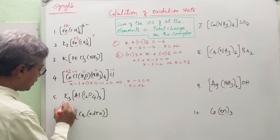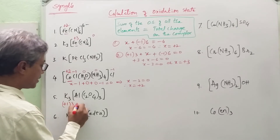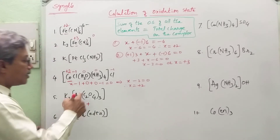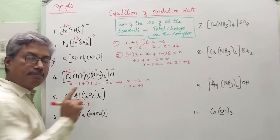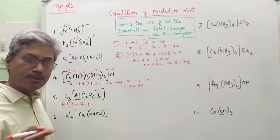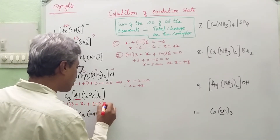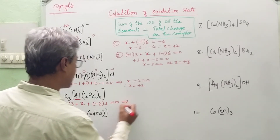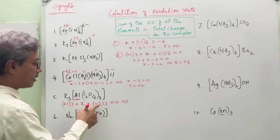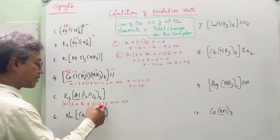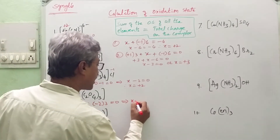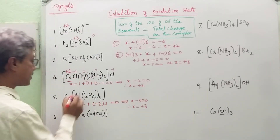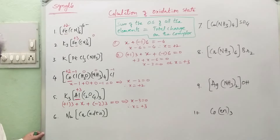Similarly, there is an alkali metal with charge +1 appearing 3 times, giving +3. Plus the central metal x. Plus oxalate ion, whose charge is minus 2, appearing 3 times. The total charge is 0. This gives: +3 + x + (−2 × 3) = 0, so +3 + x − 6 = 0, meaning x − 3 = 0, therefore x = +3. The oxidation state of the metal is +3.